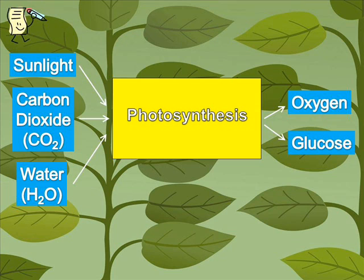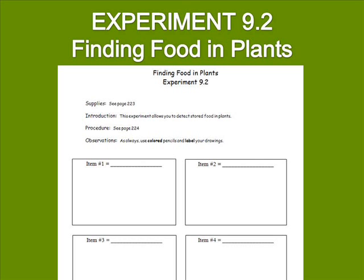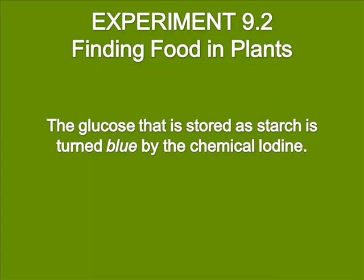In order to show that glucose really is an output of photosynthesis, we're going to do Experiment 9.2. You need to find this lab report, and you also need to have a pen or a pencil and some colored pencils to do your drawings. The glucose that is produced by photosynthesis is stored in plants as starch. Starch has an interesting quality in that it turns a dark blue when the chemical iodine comes in contact with it.